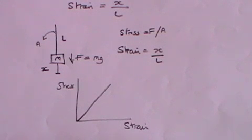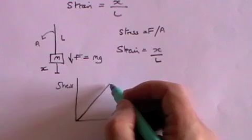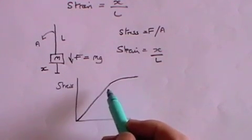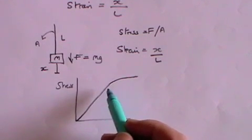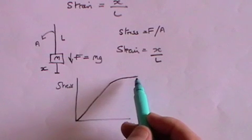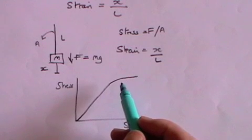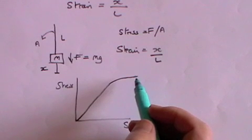Eventually the material — the wire — will no longer return to its original position; it will become permanently deformed, and so the graph curves away from the straight line. Depending on the material, it will either break so there is no further extension, or it will go into a plastic mode where it no longer returns to its original position, or it can reach a point where it continues to extend even without any further mass being added.